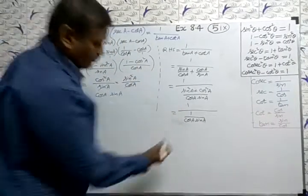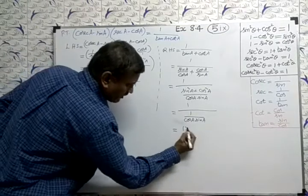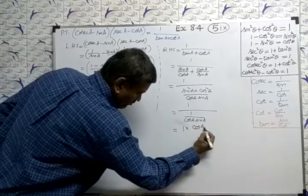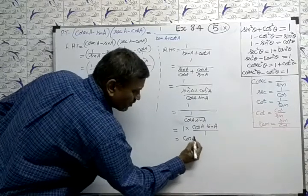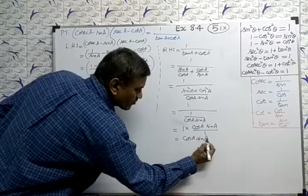So, reciprocal it offside. 1 into cos A sin A by 1. Answer is cos A sin A.